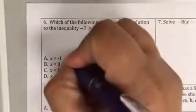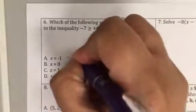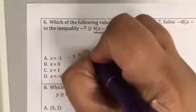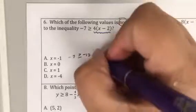So this is saying, is -7 greater than or equal to -12? Is that a true statement? Yes it is, which is not the answer we're looking for.